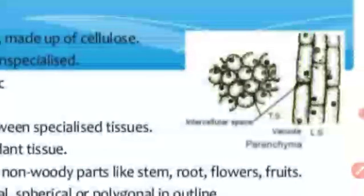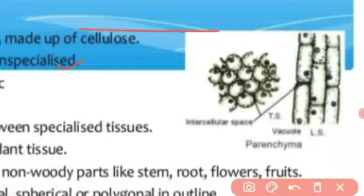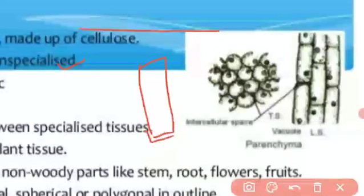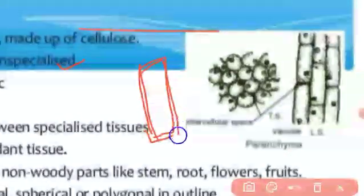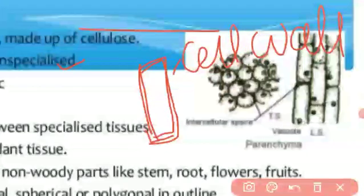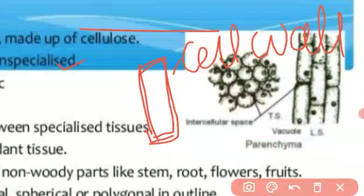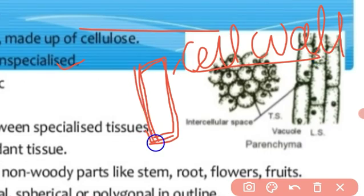The cell wall is the outer covering of the cell. Plants have a cell wall; animals do not have a cell wall — they have only a cell membrane. You will study more about cell walls and cell membranes in higher classes. The cell wall of parenchyma tissue is thin and it is made from cellulose, which is one kind of material.